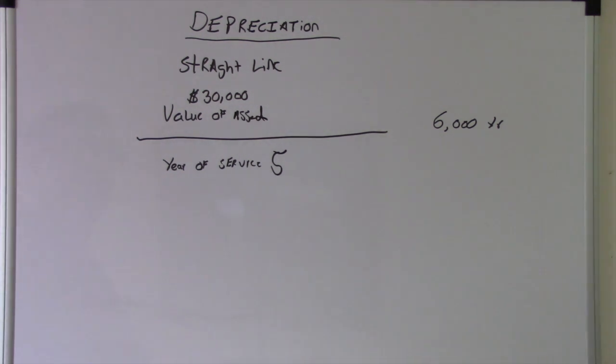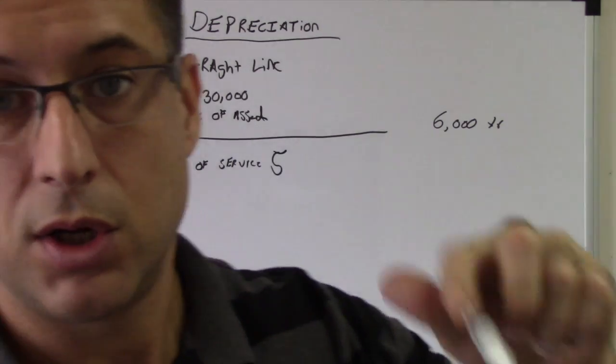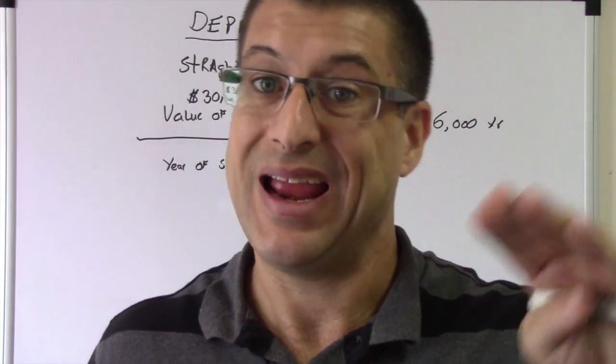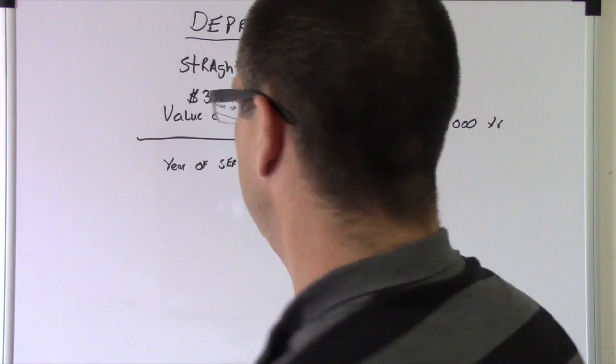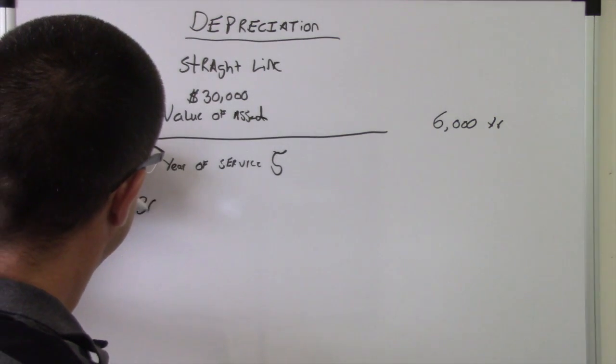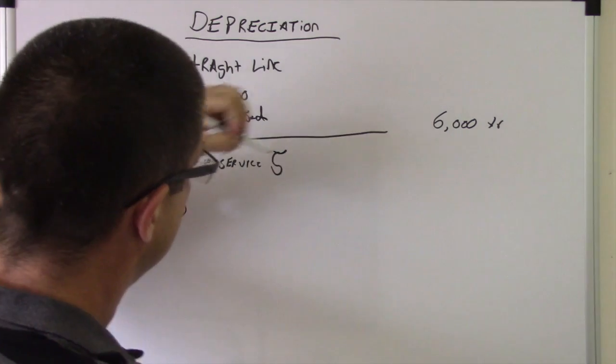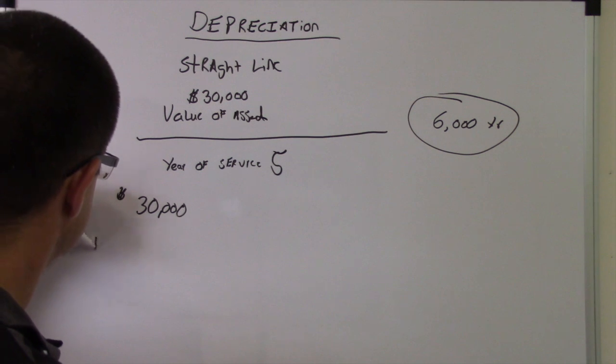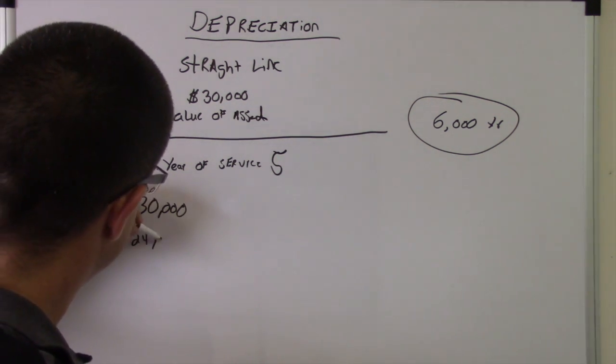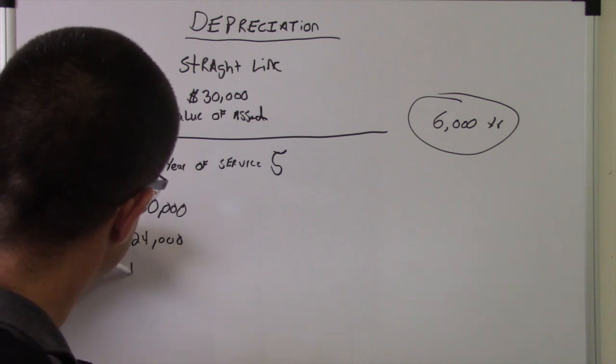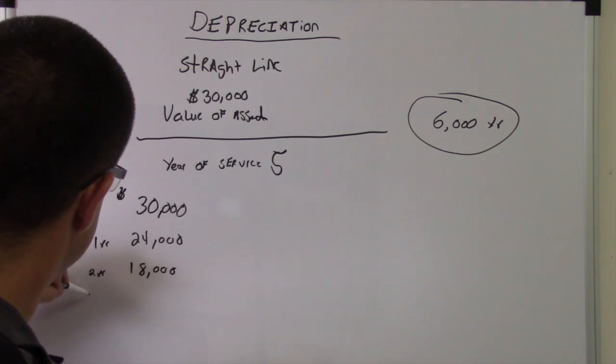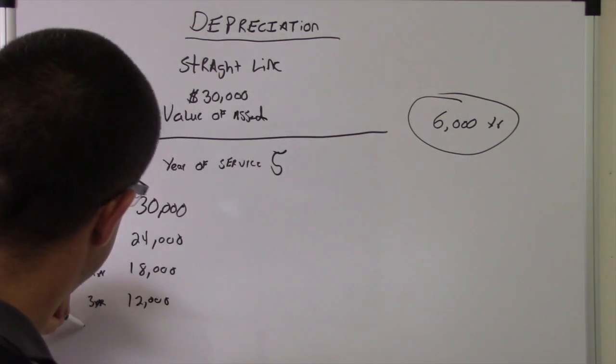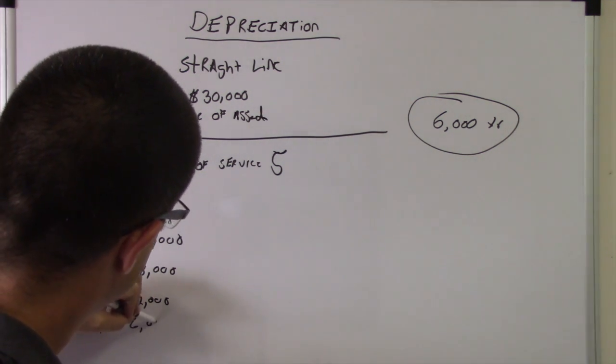After one year, your truck is gonna be worth $24,000. After two years, it's gonna be worth $18,000. Let's do this. So $30,000, and this is $6,000 a year. Year one: $24,000. Year two: $18,000. Year three: $12,000. Year four: $6,000.